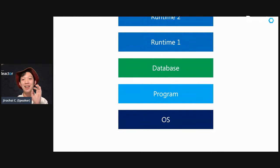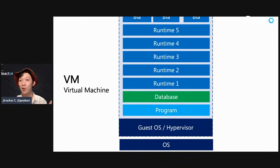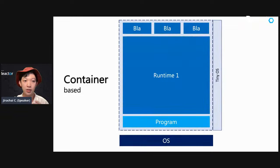We can conclude that we have many components like OS, program, database, runtime, and other backup or micro services. We solved this with a VM or virtual machine — we pack everything into one box running under a guest OS. But as I mentioned, the guest OS is quite really big, around 40 to 50 gigabytes per guest OS. So now we have new technology called container-based. We remove the large guest OS from the previous slide and use a tiny OS instead.